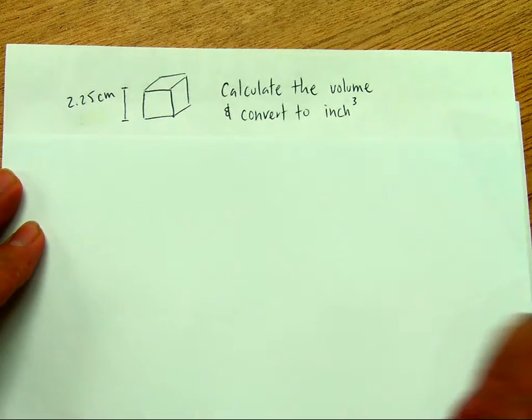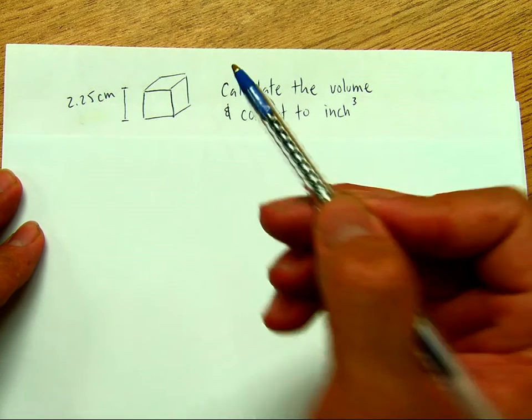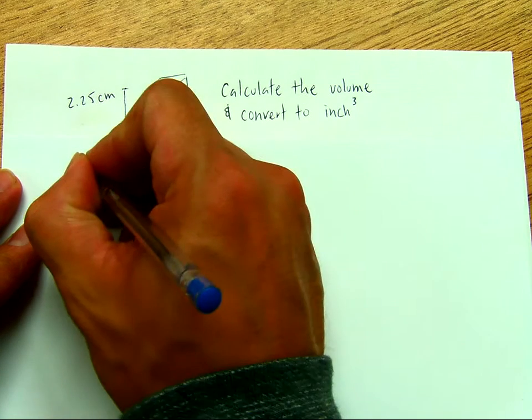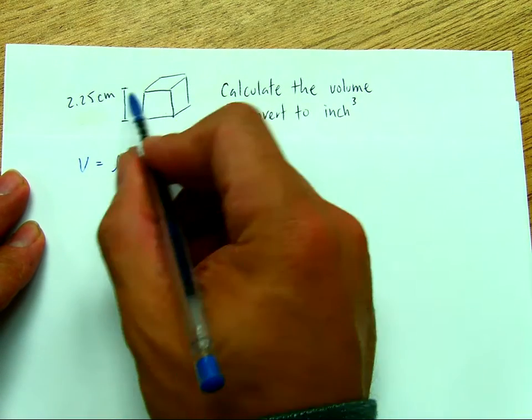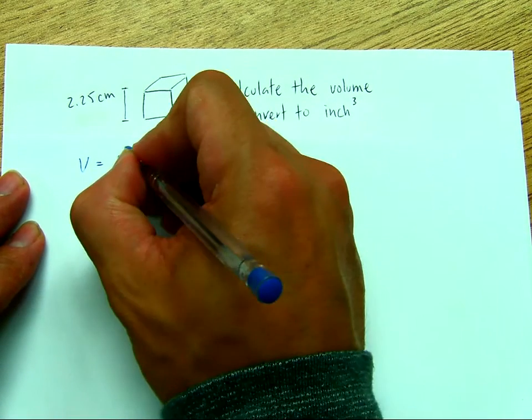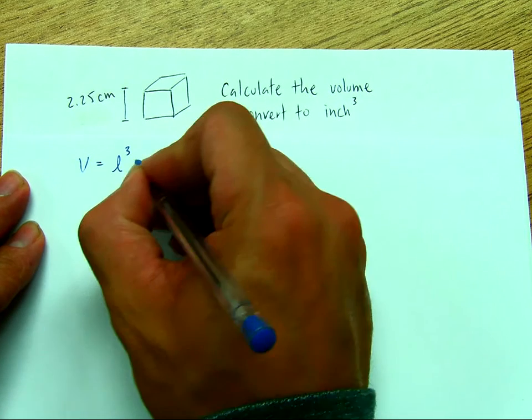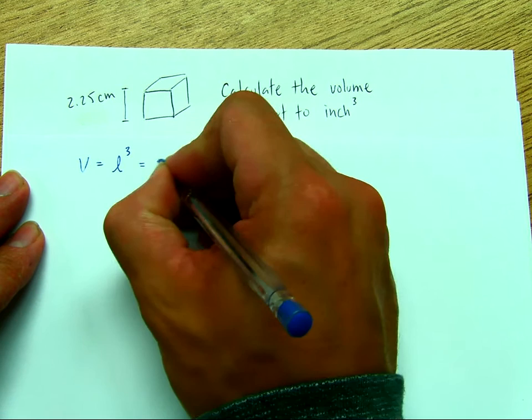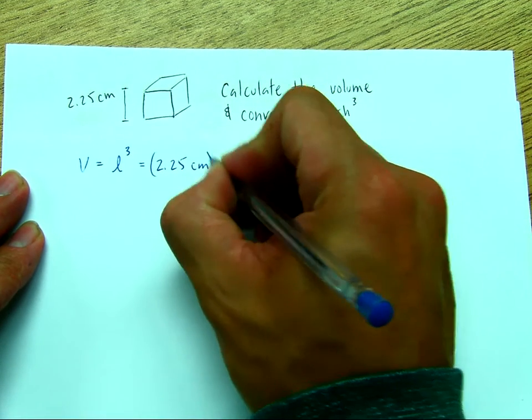Okay, so first, what I want to do is convert this into a volume. So volume is length for a cube, since all the sides are the same, it's length cubed. So each length is going to be 2.25 cm, and we're going to cube that.